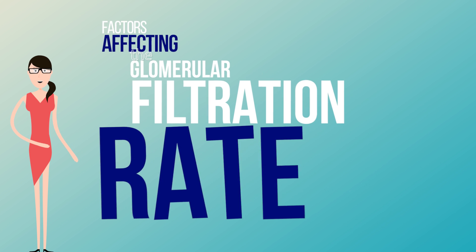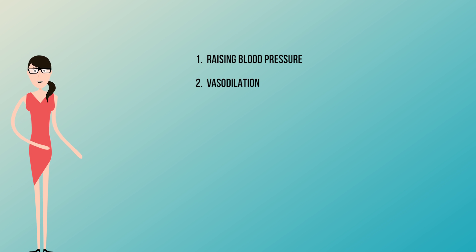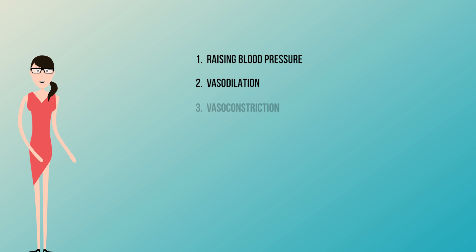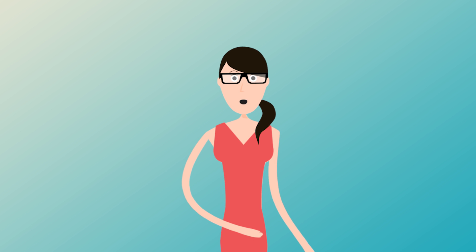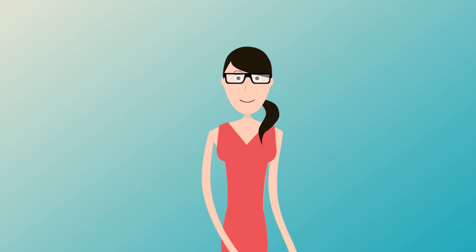It's also important to know the factors that affect glomerular filtration rate. Filtration rate can be increased by raising blood pressure, or by dilating the afferent arterioles — called vasodilation — which decreases resistance to blood flow into the glomerulus. Another regulatory mechanism is to increase resistance in the efferent arterioles by constricting them, which is called vasoconstriction.